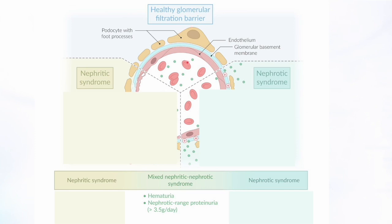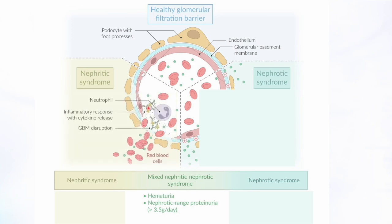The normal healthy barrier has the endothelium, basement membrane, and podocytes — no red blood cells or protein should escape because of the negative charge and small pore size. In nephritic syndrome, damage occurs due to inflammation from immune complex deposition, which activates neutrophils via type 3 hypersensitivity. Cytokines bring in neutrophils that damage the basement membrane.